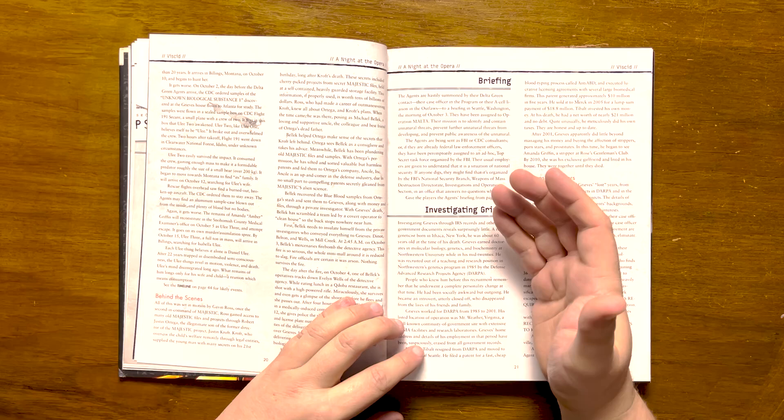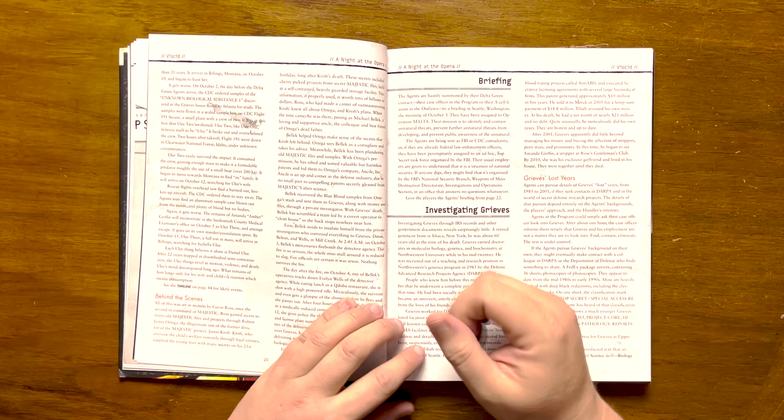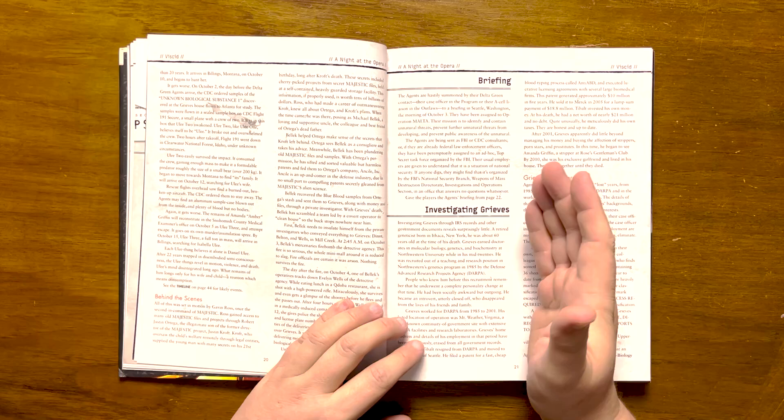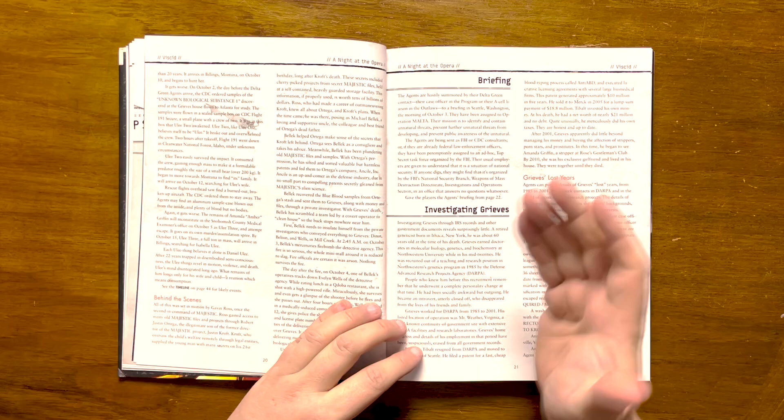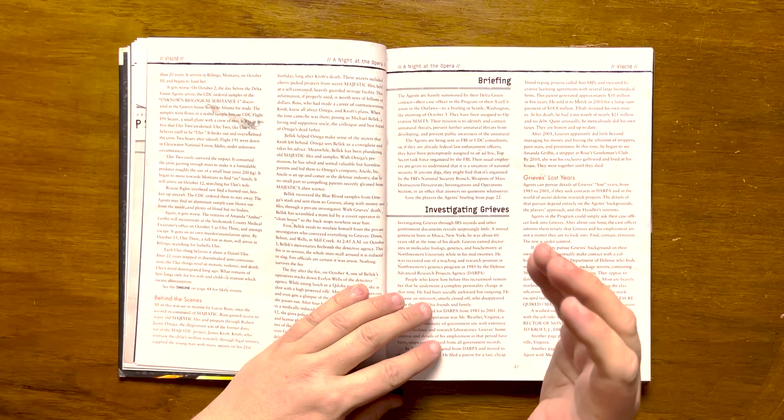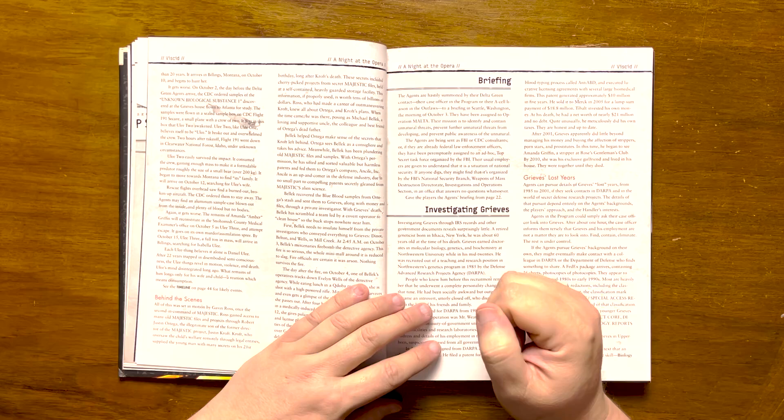Behind the scenes, Gavin Ross has set all of this in motion. He gained access to old Majestic files through Robert Justin Ortega, the illegitimate son of a former director of Majestic, Justin Croft. Croft had remotely overseen his son's welfare and left him with many secrets on his 21st birthday: cherry-picked projects worth billions of dollars. Posing as Michael Bellic, he acted as a supportive uncle and friend of his dead father. As Bellic, he explained the secrets that had been left to him, and Ortega respects and values his advice.